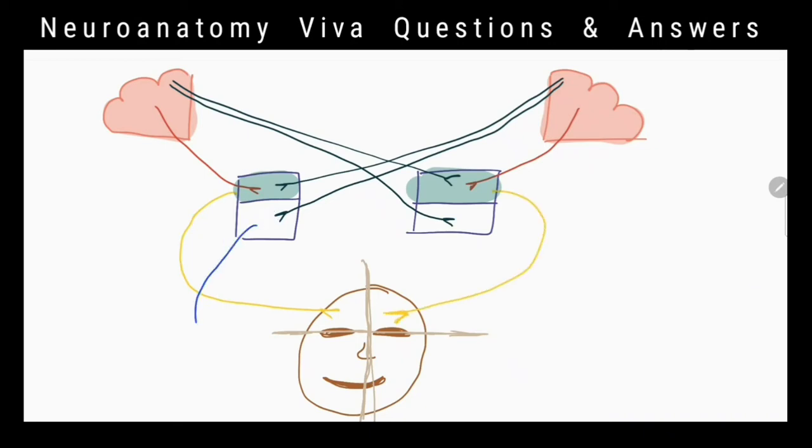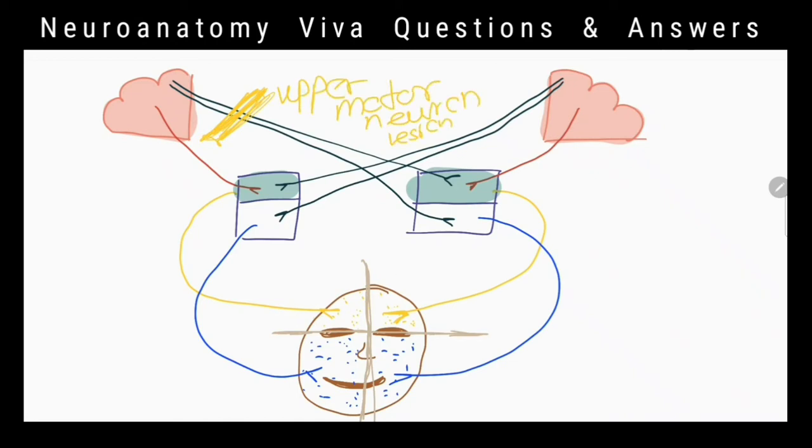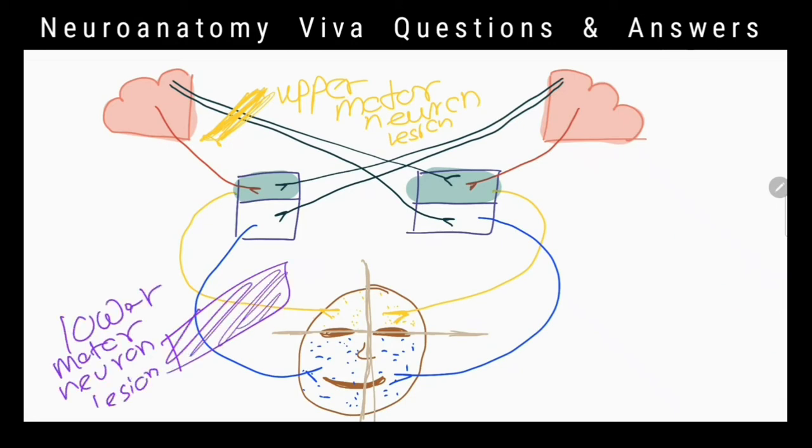Why are upper parts not affected? The part of the facial motor nucleus that controls the muscles of the upper part of the face receives corticonuclear fibers from both sides. So when corticonuclear fibers of one side are damaged, it doesn't affect much for the muscles of upper side because the nucleus also receives corticonuclear fibers from the other side.